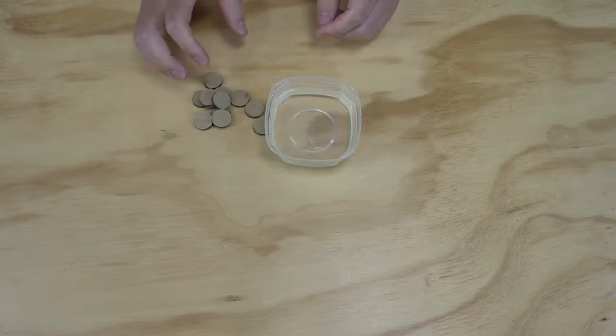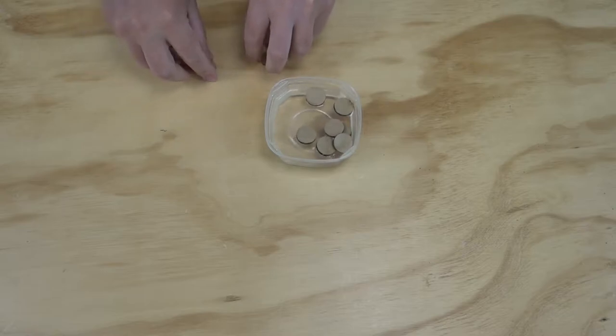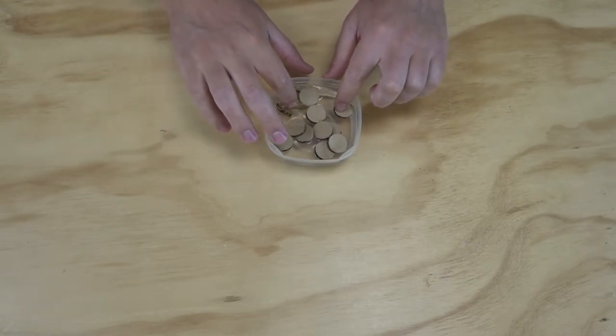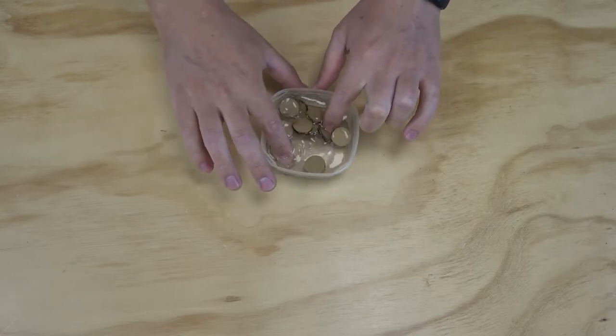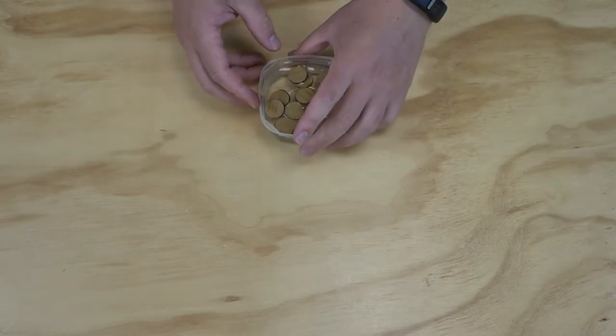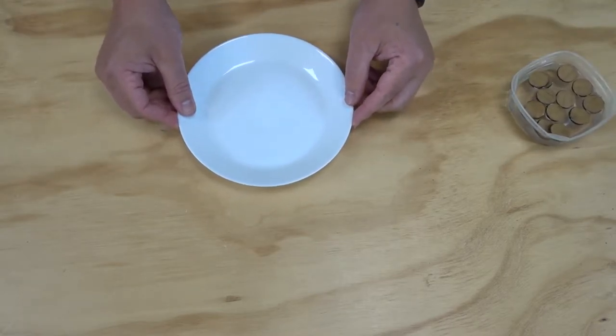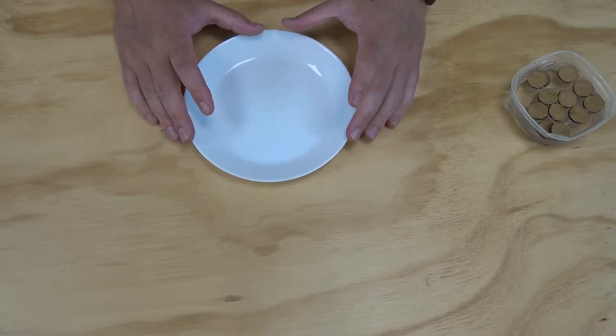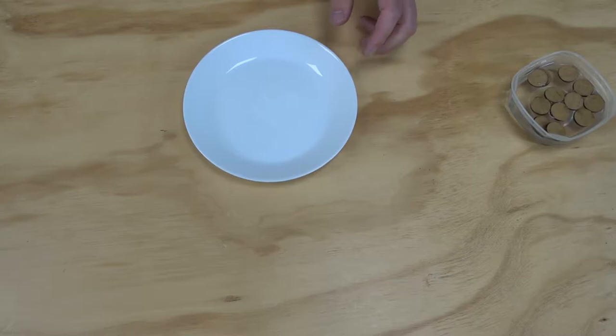The first step is we need to soak our cardboard discs in the vinegar. Simply drop them in and let them get nice and wet with that vinegar. You may need to push them down a little bit, give them a squeeze until they're all soaked in. I'm going to set those off to the side to soak while I get the next step set up. I'm going to make my battery on a plate today just to keep my vinegar contained because it can go all over the place. You can just do this on the table as long as you've got something you can clean up easily.